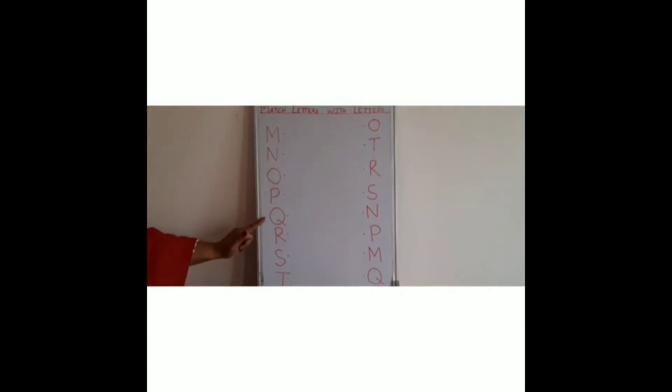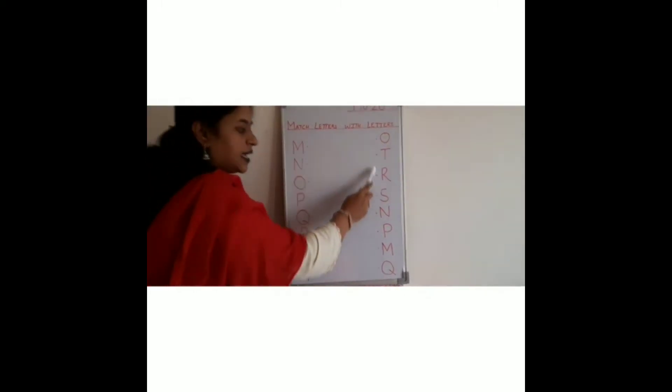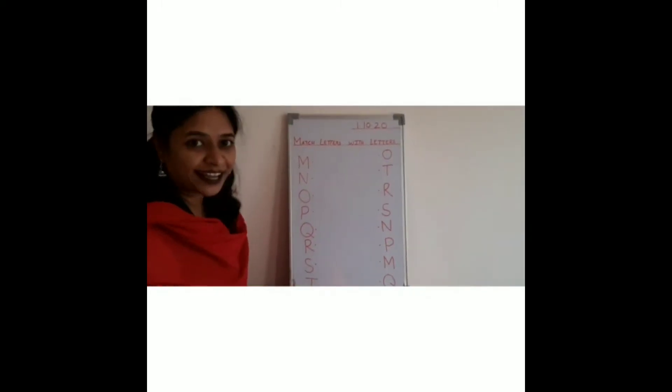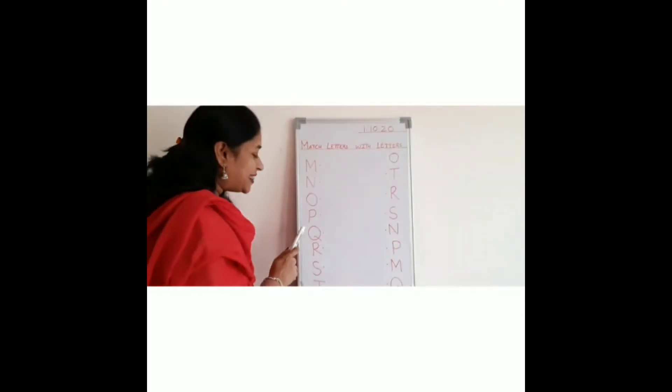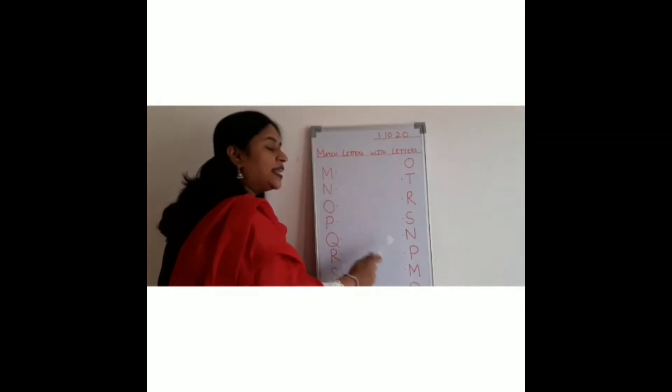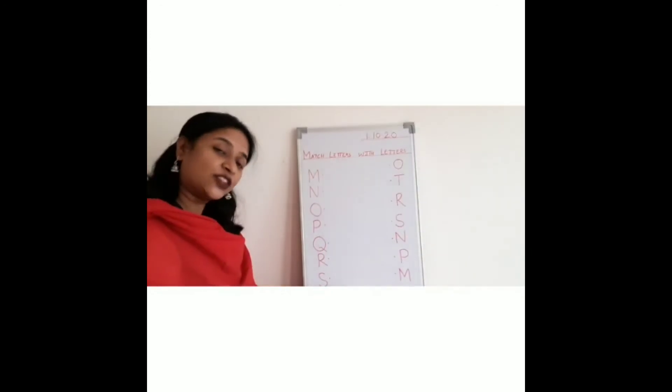You have to see this line and this line. Same. M, N, O, P, Q, R, S, T. All the alphabets are there. Now you will see here and what you have to do? Match. That is called letter with the letter you have to match. So we will start.